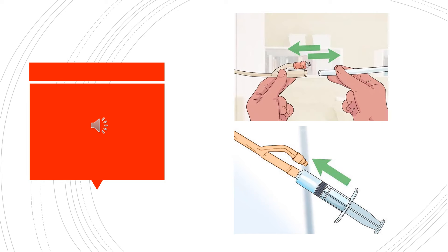Number eleven, repeat the irrigation procedure until the debris is cleared from the lumen of the catheter. Note: if fluid fails to return, stop irrigation — an obstruction or an air pocket may be present. Try gently rotating the catheter in your fingers or turn the client from side to side to clear the catheter.